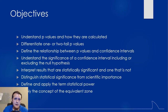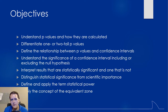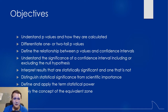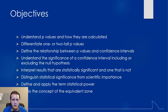Some of the things we're going to look at are p-values and how they're actually calculated. We're not going to do the calculations ourselves. We'll look at one and two-tail p-values, define the relationships between p-values and confidence intervals, talk about null hypotheses, statistically significant results, statistical significance versus clinical importance, statistical power, and the concept of the equivalence zone.